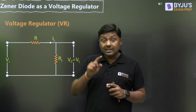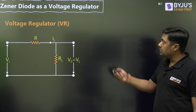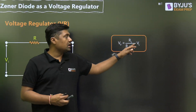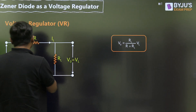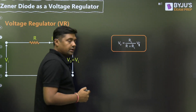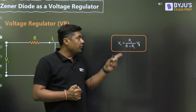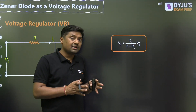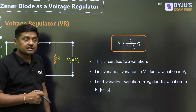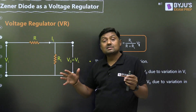Vi is called the line voltage and there is variation in the line voltage. V0 depends on both R_L and Vi. Variation in V0 due to Vi is called line variation, and variation in V0 due to R_L is called load variation. We now connect a Zener diode in parallel to R_L — that is why it is called a shunt voltage regulator, because the regulating element is connected parallel to R_L.